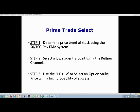We use PrimeTradeSelect to select our option purchases. There are three steps involved. First, we determine the price trend of the stock using a 50- and 100-day exponential moving average system. Step two is we select a low-risk entry point using the Keltner channels. And step three is we use what we call the 1% rule for selecting an option strike price.